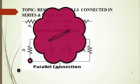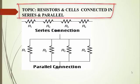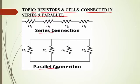Hello and welcome to another session in physics. In this session we'll be looking at the topic of resistors and cells connected in series and in parallel. As you can see from this slide, you can see instruments or devices that have been connected in some sort of connection. These components are called resistors, and resistors have two kinds of connection: the series connection and the parallel connection.